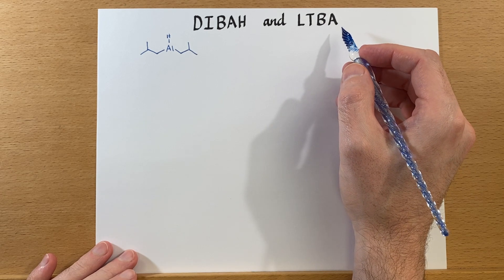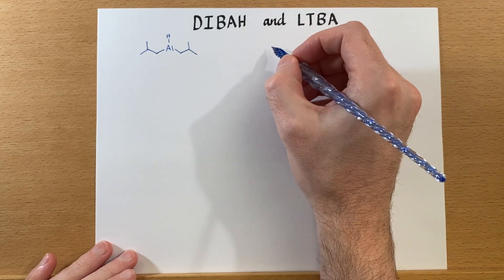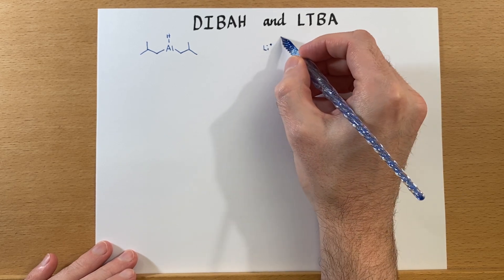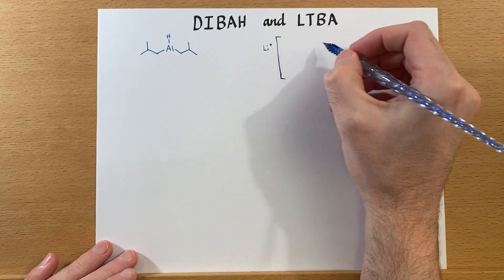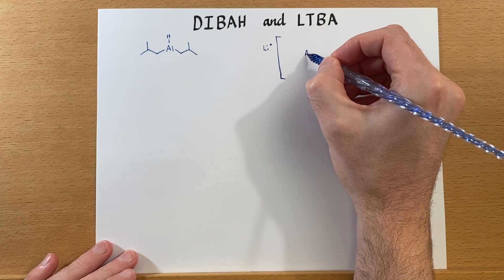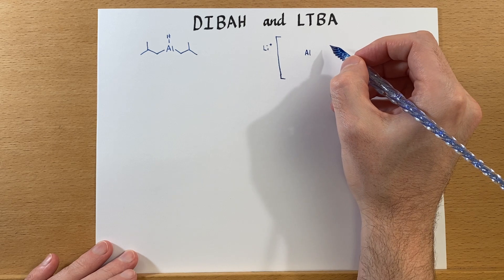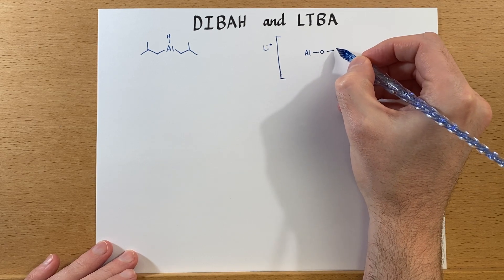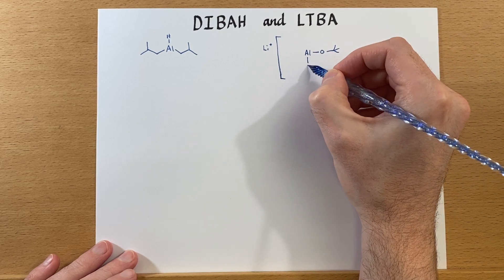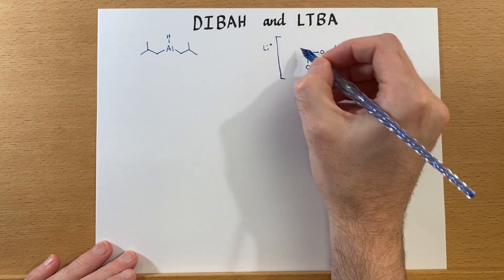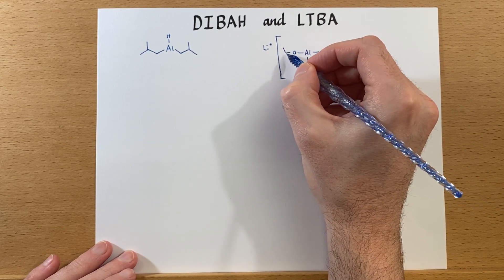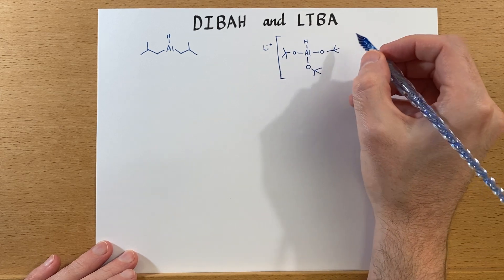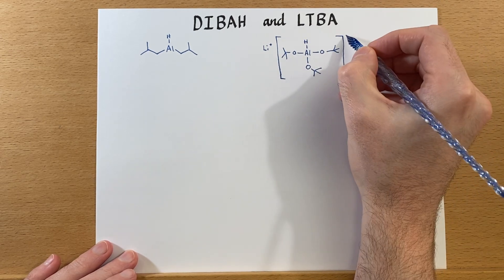LTBA is lithium tri-tert-butoxy aluminum hydride. It's a little bigger to draw — we have our lithium counter ion, here's our aluminum, and we need three tert-butoxide groups. We'll also need our hydride for the reducing portion, and of course this whole thing is actually negatively charged.